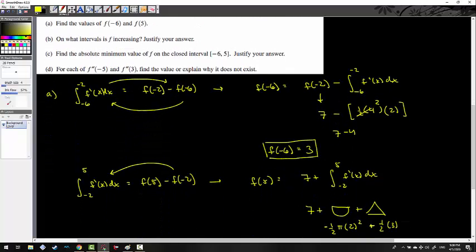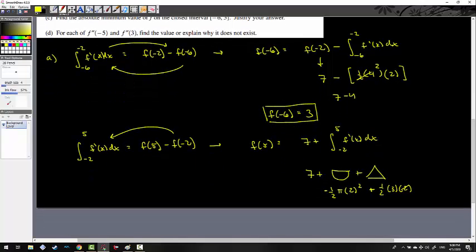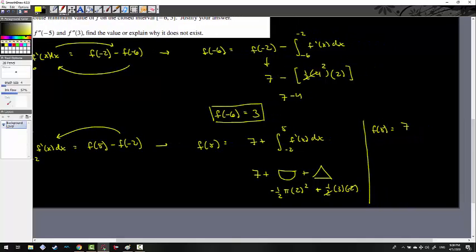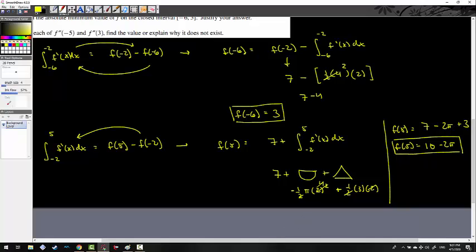So f(5) is equal to 7 minus 2π plus 3, so 10 minus 2π equals f(5). Those are the two values. That is part A. That took a lot of space. I'm going to clean that up a little bit. And we will see you in a few seconds.